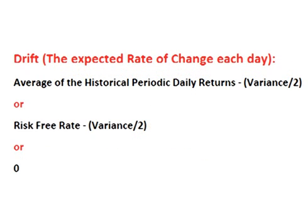There are two other main theories for the asset's expected daily rate of change or drift. One theory is that the drift will be the risk-free rate eroded by volatility — the risk-free rate being the rate one can get on a fixed income, risk-free asset such as a government bond. This theory is supported by the no riskless arbitrage argument. The other main theory is that the expected daily rate of change or drift should be zero, which is supported by the random walk theory.